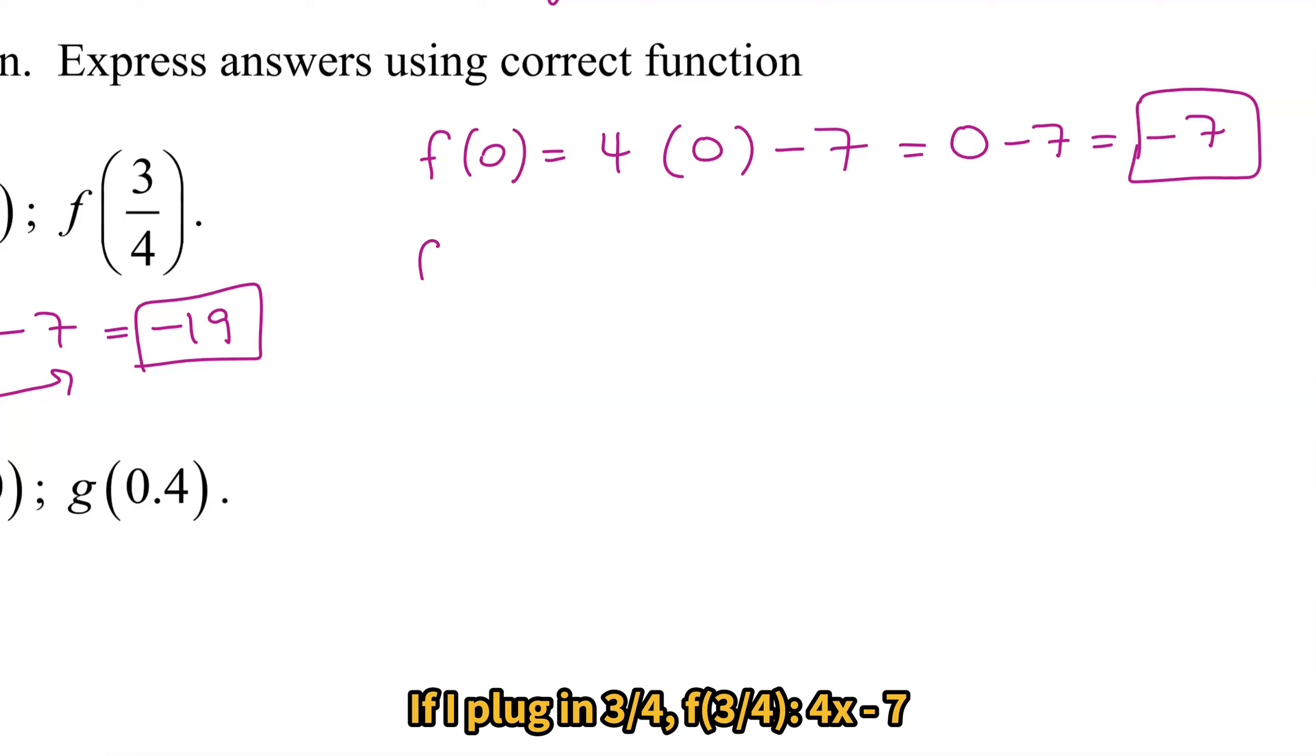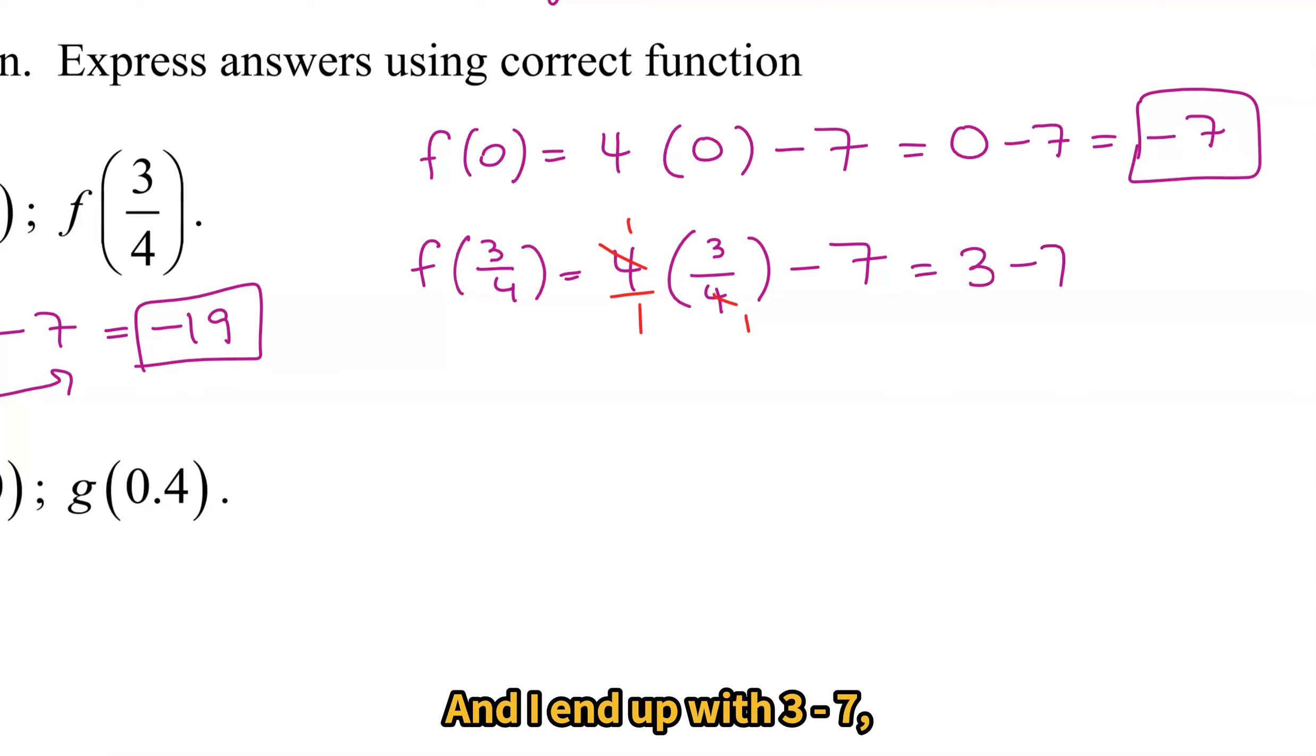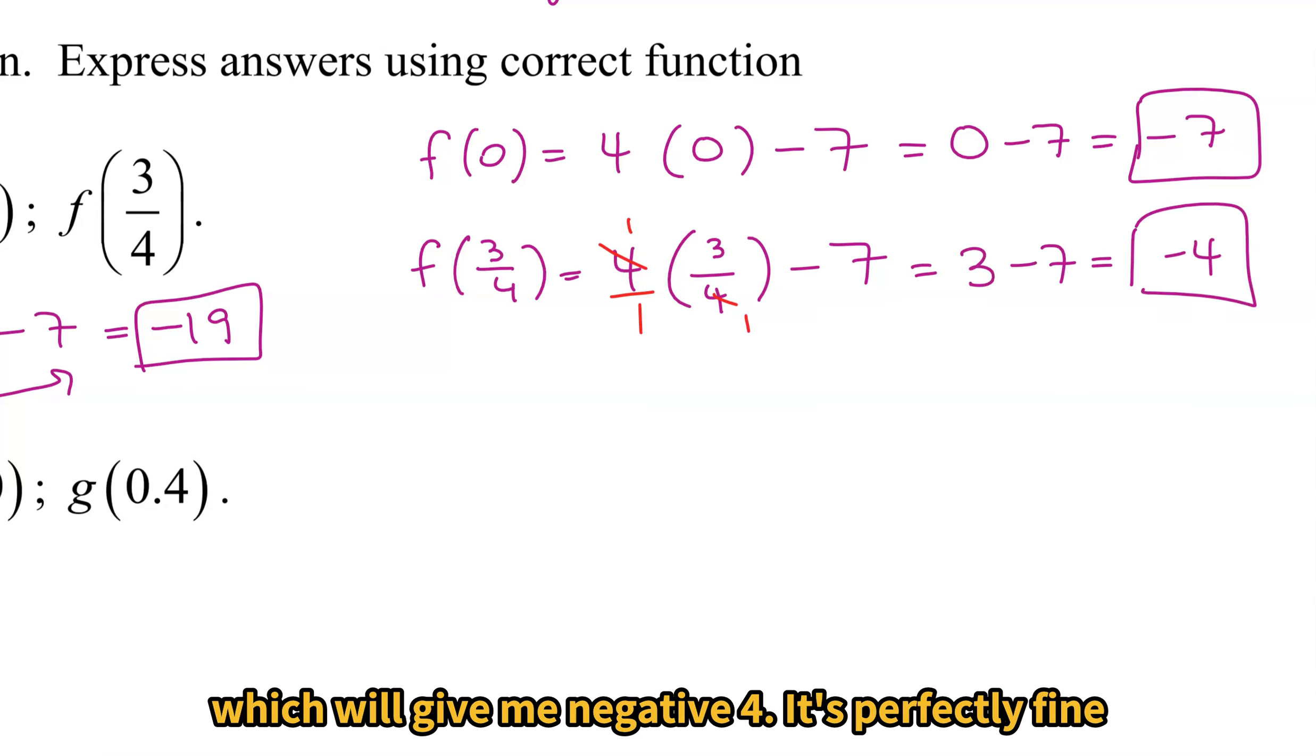If I plug in 3/4, f(3/4), 4x - 7, 3/4 will go there. This one makes it nice because I can cancel the 4s out, working with my rational expressions. And I end up with 3 - 7, which will give me -4.